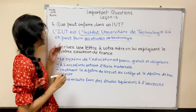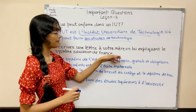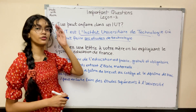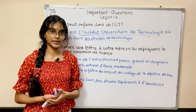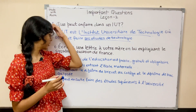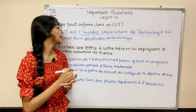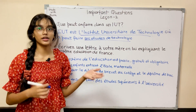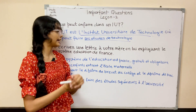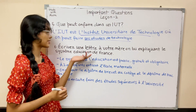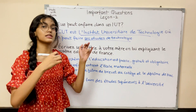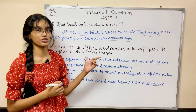The next question is: Écrivez une lettre à votre mère en lui expliquant le système d'éducation de France — write a letter to your mother explaining the education system of France. This can come in your section B, expression écrite. I haven't written the whole letter here; I've just mentioned a few pointers you can include. This is a very important question from this chapter. Both France as well as India can be asked, but France is a more frequent question.